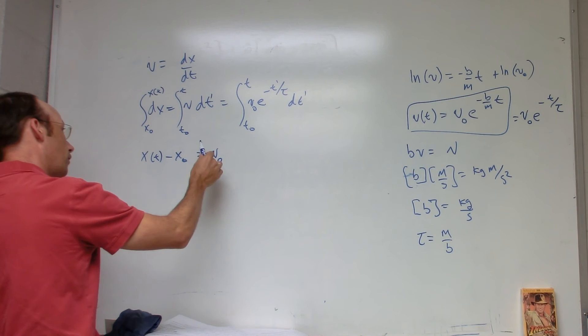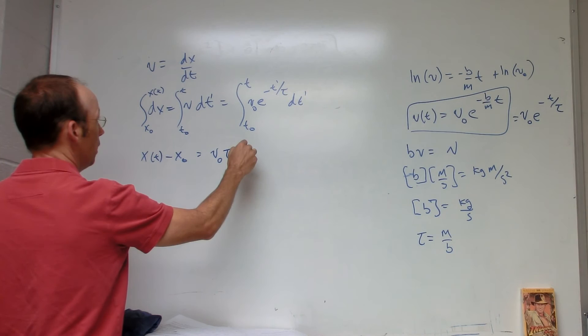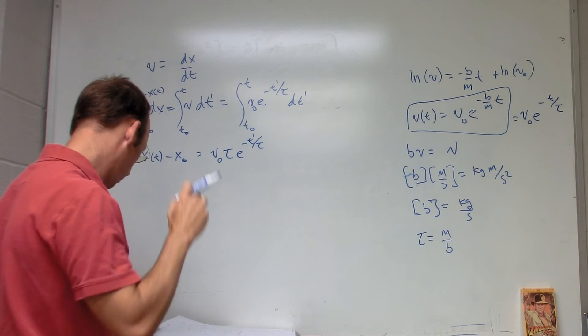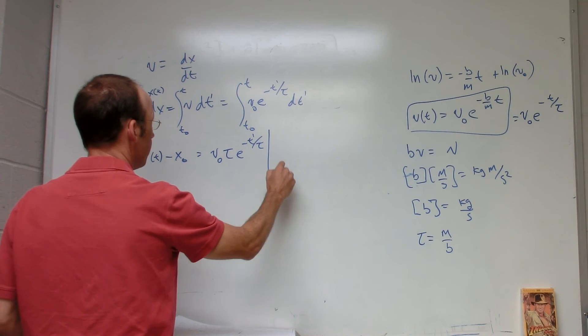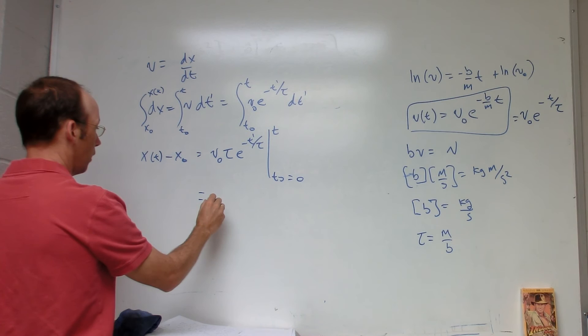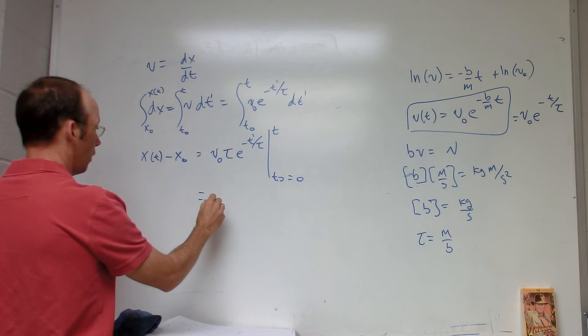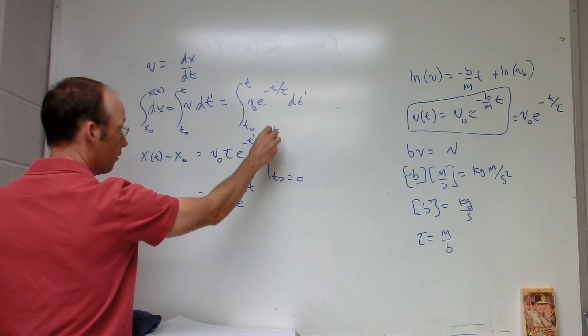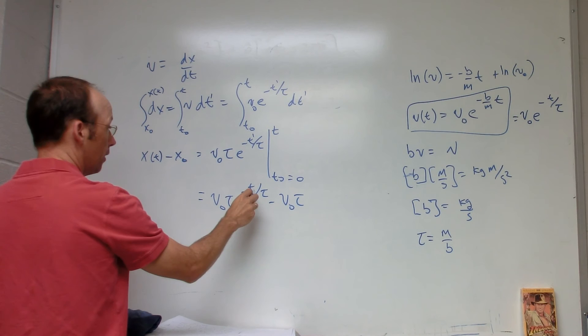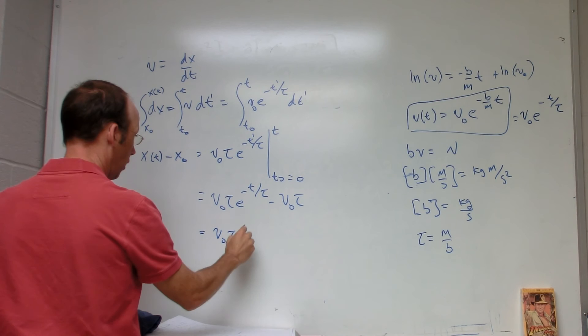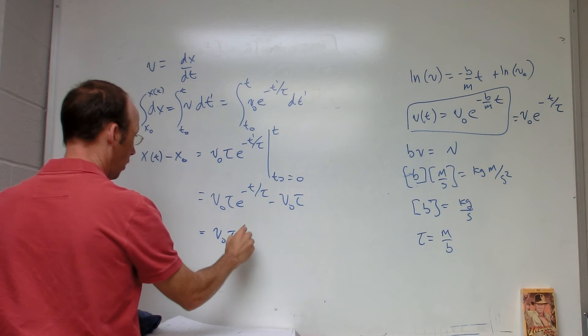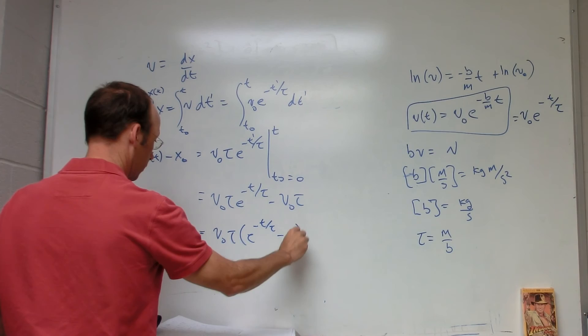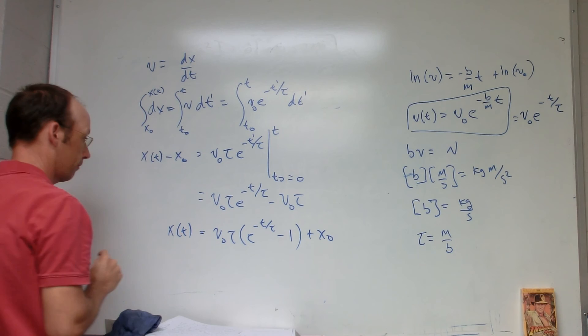Integrating v₀ · e^(-t'/τ) gives v₀·τ · e^(-t'/τ), evaluated from 0 to t. Plugging in the limits: at t I get v₀·τ · e^(-t/τ), and at 0 I get v₀·τ · e^0 = v₀·τ. So x(t) = x₀ + v₀·τ · (e^(-t/τ) - 1).